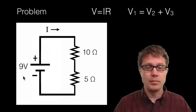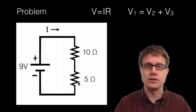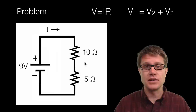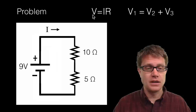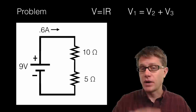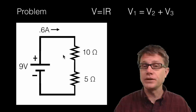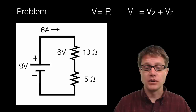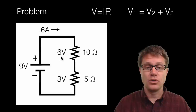Let us do a simple problem. We have a 9 volt battery with a 10 ohm and a 5 ohm resistor. Adding those resistances gives a total of 15 ohms in this series circuit. With 9 volts across 15 ohms, the current is 0.6 amps. Using Ohm's law, the 10 ohm resistor has a voltage of 6 volts and the 5 ohm resistor has 3 volts. So 9 volts minus 6 volts minus 3 volts equals zero — Kirchhoff's loop rule is confirmed.